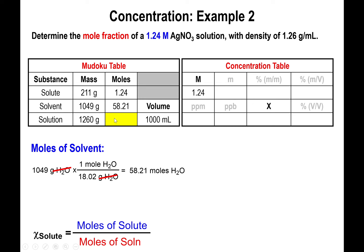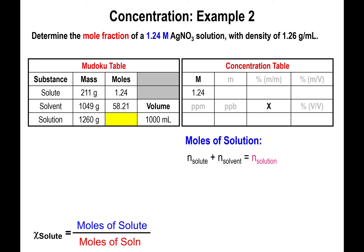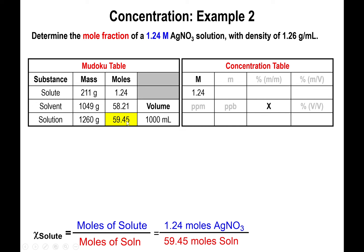Now to get the moles of the solution, all we have to do is recall that moles of solute plus moles of solvent equals moles of solution. So add these two values together, and you'll end up with 59.45 moles of solution. Now that we have the moles of solution, we can finally find the mole fraction. The mole fraction equals the moles of the solute over the moles of solution, 1.24 moles over 59.45 moles, which equals ultimately 0.0209. That's the value of the mole fraction.